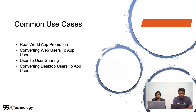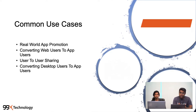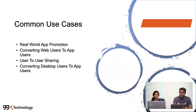Another use case is user-to-user sharing. If I want to share with someone a link about a specific game, coupon, or form, you can easily share it through deep linking. Especially when it comes to games — if you want to share only a specific level, you can straight away share it through a deep link. Then the other person can straight away go to that level and play on.